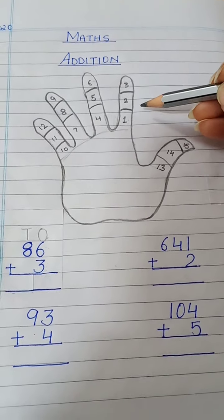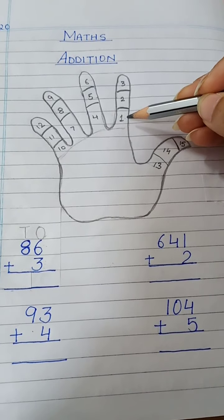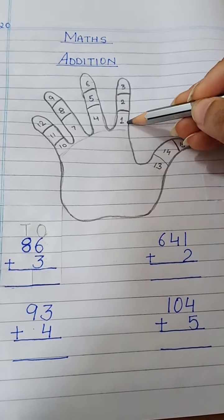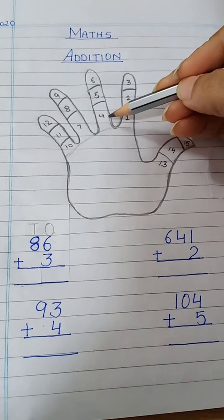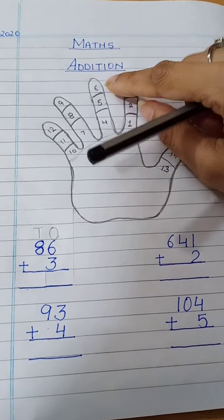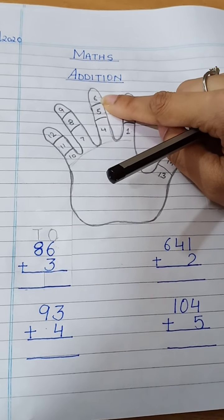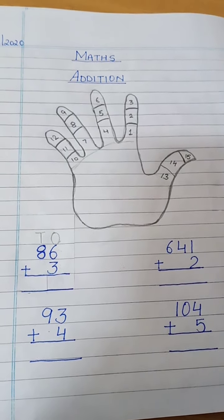First we have to take 6, so let's count 6: 1, 2, 3, 4, 5, 6. So till here I have counted 6.